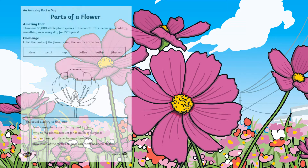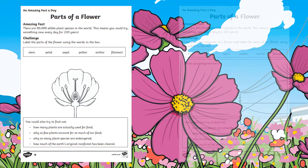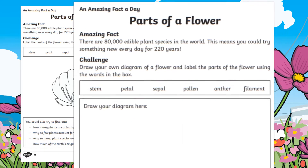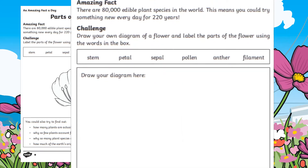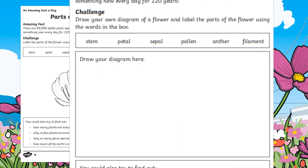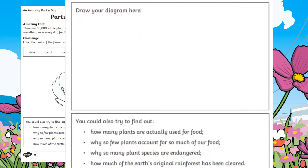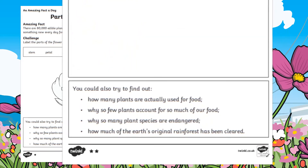Our Parts of a Flower differentiated worksheets allow learners to display their knowledge of parts of a plant with a labelling activity. There are also extension questions at the end of the sheet that will allow learners to go off and complete personal project research.